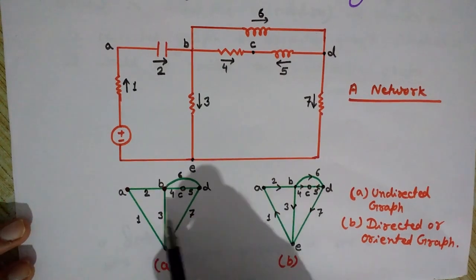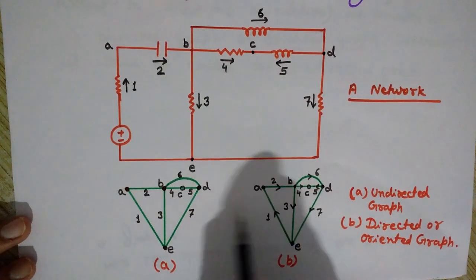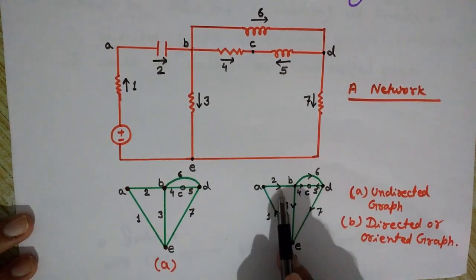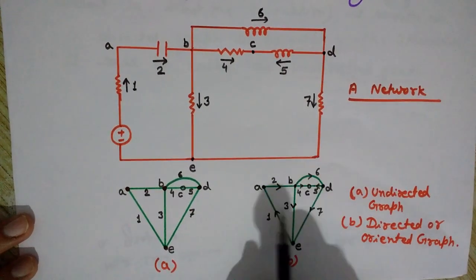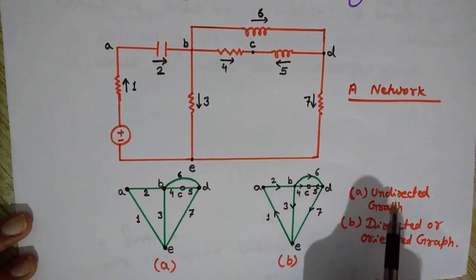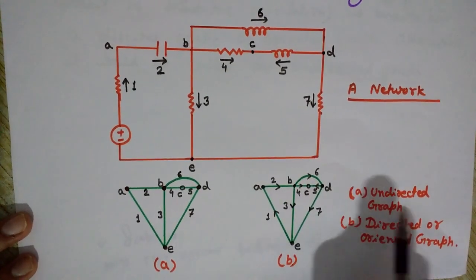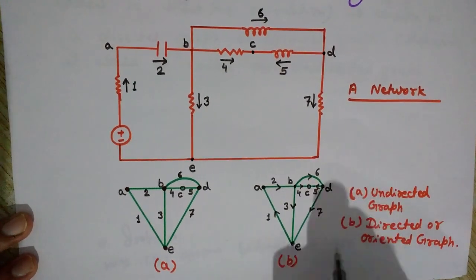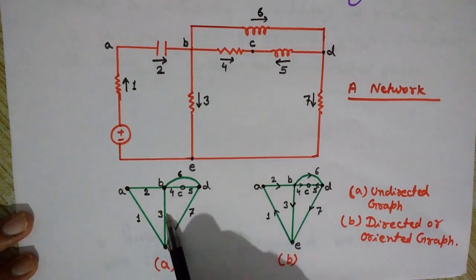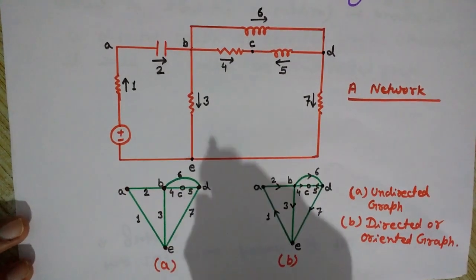So these are examples of a connected graph. Based on orientations, we have two types: undirected and directed. This is the directed and this is the undirected graph.